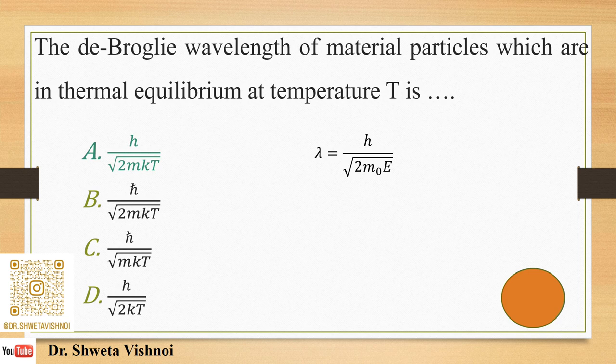When a gas is in thermal equilibrium, H upon √(2KT) represents energy of 1KT. The value of N depends on the degree of freedom — for monatomic gas it differs from diatomic gas. So the expression becomes H upon √(3MKT) or H upon √(5MKT) depending on the case.